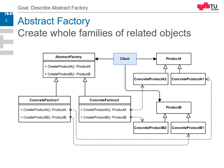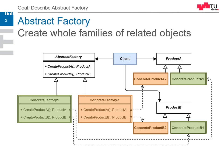We just tell the Abstract Factory: give me a factory for product line A, give me a factory for product line B — or for product line 1 and product line 2. Then we get a factory — for example, Concrete Factory 1 — which can create product A and product B, which are compatible to each other. This is the product family, and these are aligned together and compatible to each other.